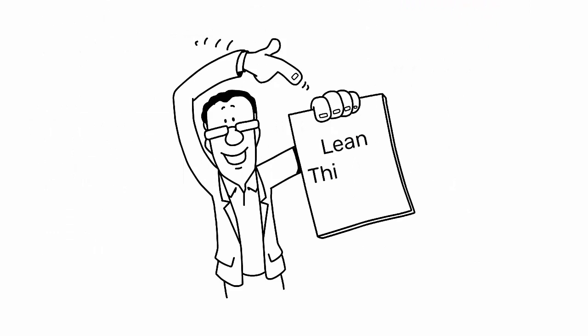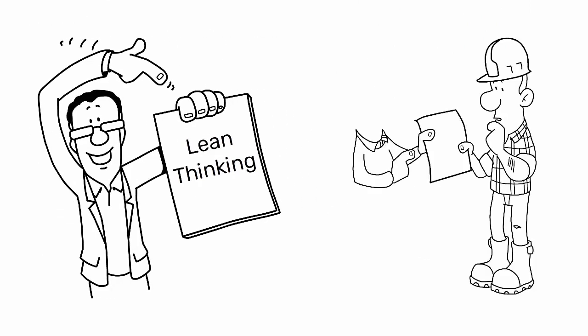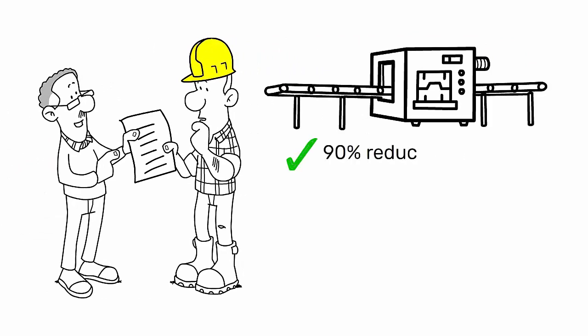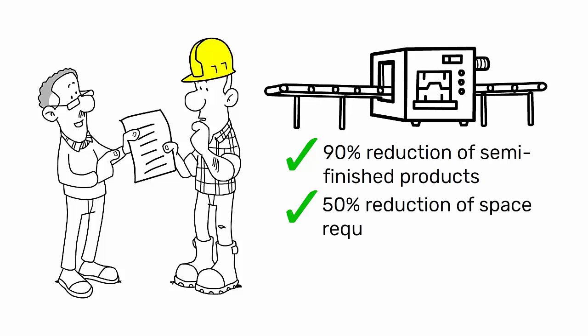Also in the book, Lean Thinking, it is argued that if guided by a great sensei, the following results can be obtained: 90% reduction of semi-finished products, 50% reduction of space required, 90% reduction of processing lead times.